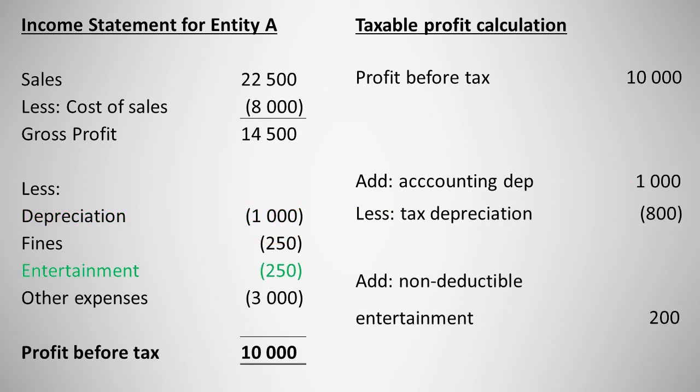We also add back $200 of entertainment expenses that were subtracted for accounting purposes but are not deductible for tax purposes. We then go through the income statement to find any other items that are treated differently for tax purposes. We have already adjusted for depreciation and entertainment expenses.